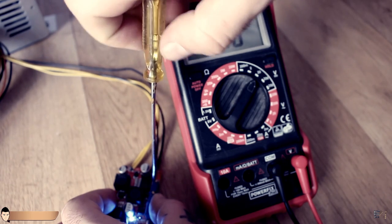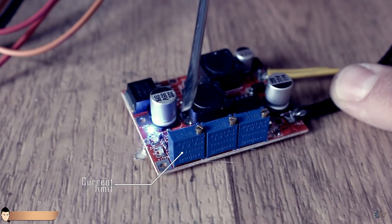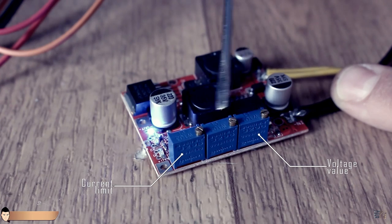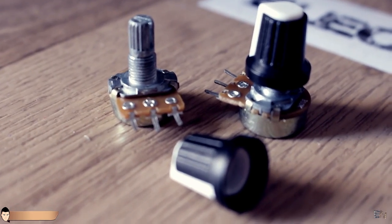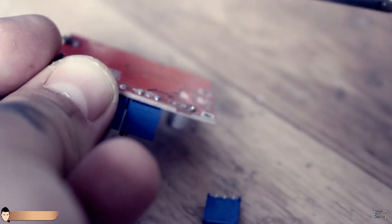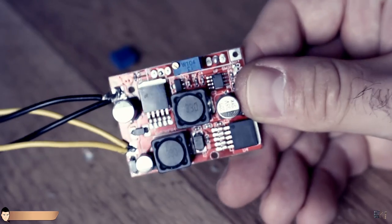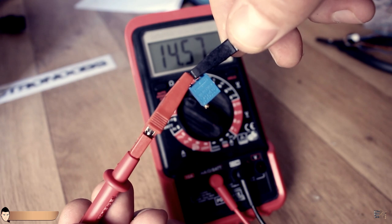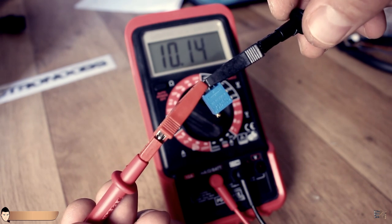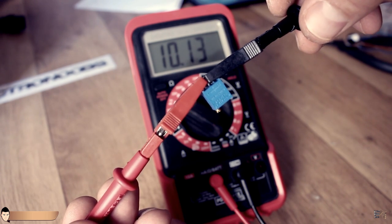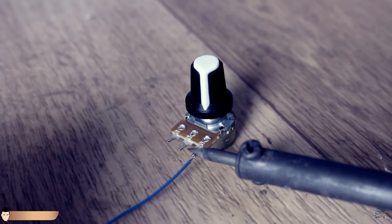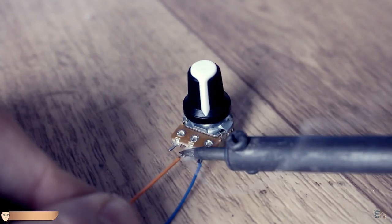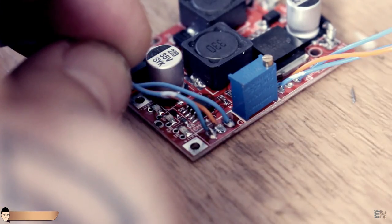Using these small potentiometers I can change the current limit and also the voltage output. But I want to use bigger potentiometers. So for that, using a soldering iron I take out the 2 potentiometers. Now, I measure the resistance of each in order to use the same values for the big ones. These are 10K potentiometers, so I will use the same value. I solder some wires to the potentiometers and solder the other end of the wires to the voltage converter board.